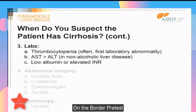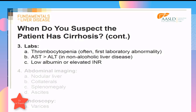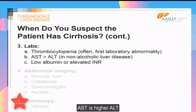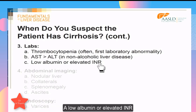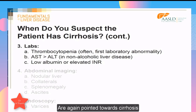On laboratory testing, thrombocytopenia should alert you to the possibility of cirrhosis; it is often the first laboratory abnormality noted. The AST is higher than the ALT in cirrhosis and should be suspected in any patient with non-alcoholic liver disease. A low albumin or elevated INR are again pointers towards cirrhosis.